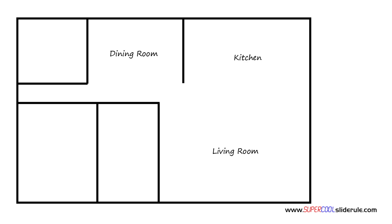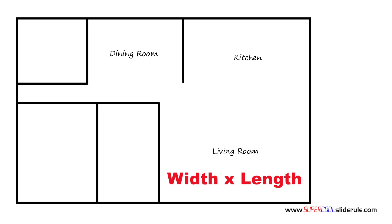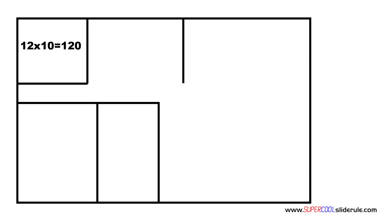The first thing that must be done is to measure each room. Once each room is measured, calculate the square foot of each room. We accomplish this by multiplying the width times the length, as shown here. For this room that measures 12 by 10, the square footage is 120.